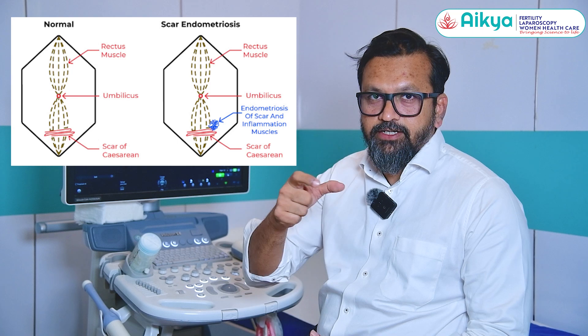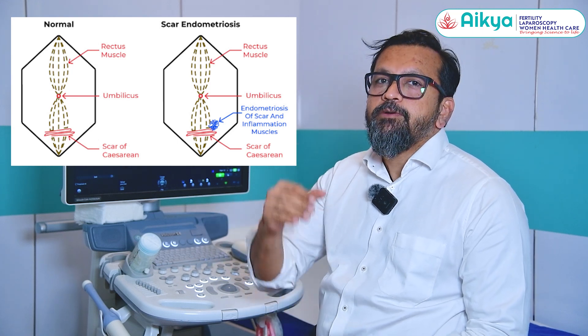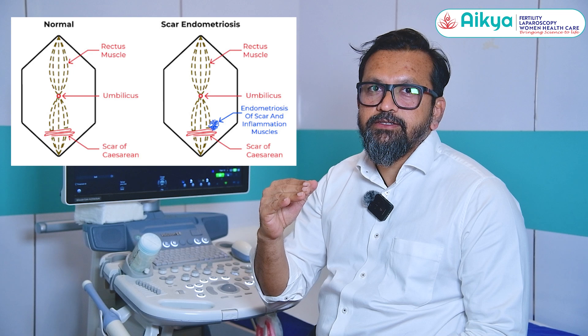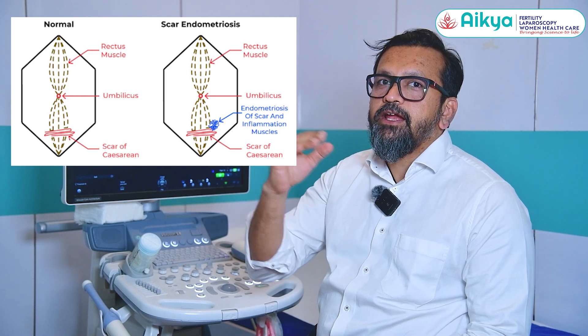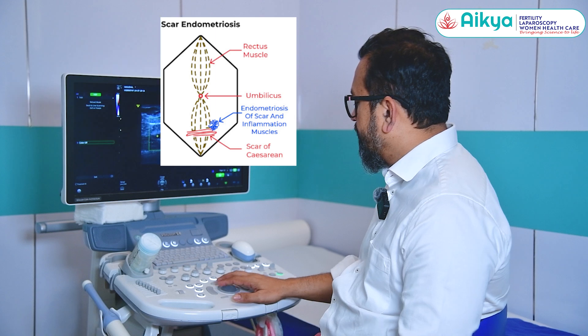The surface probe has high frequency and will be able to detect anything just below the skin or up to the rectus muscle. As we know, scar endometriosis is usually located either on the rectus sheath or on the rectus muscle — usually just below the rectus sheath and within the muscle. So it is an entrapment which we will generally find.